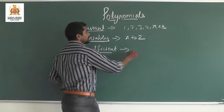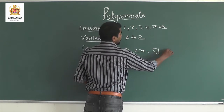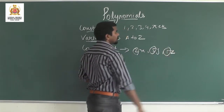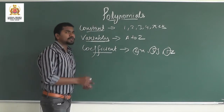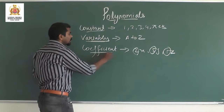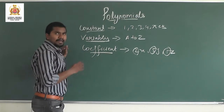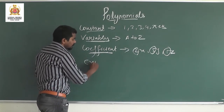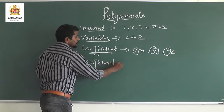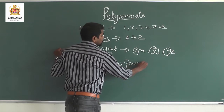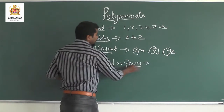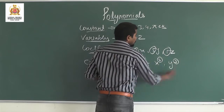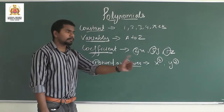For example, in 2x, the coefficient is 2; in 5y, the coefficient is 5; and in z, the coefficient is 1. These are things we already studied in Class 9th — we are just recalling them because basic knowledge of every chapter is very necessary. After coefficient, we have exponent and power. The numerical value which is placed on a variable — like y³ where 3 is the exponent/power — we call it exponent or power.